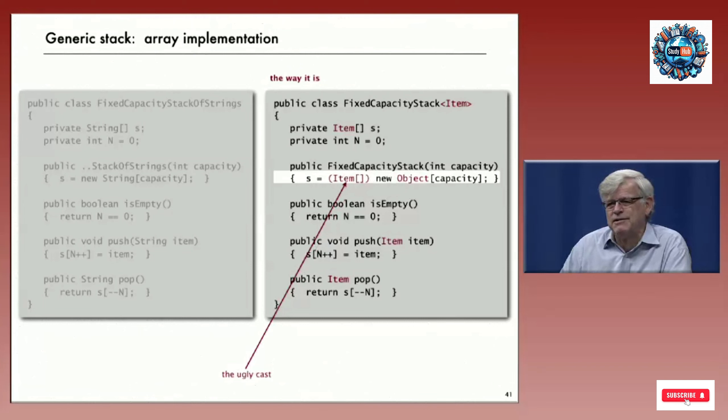For now, what we need to do is put a cast in to make this work. We create an array of objects and then we cast it down to an array of items. In my view, good code has zero casts. We want to avoid casts as much as possible because it really is declaring some kind of weakness in what we're doing. But in this case, we have to put in this one cast, so we'll refer to that as the ugly cast. It doesn't make you feel good about the code.